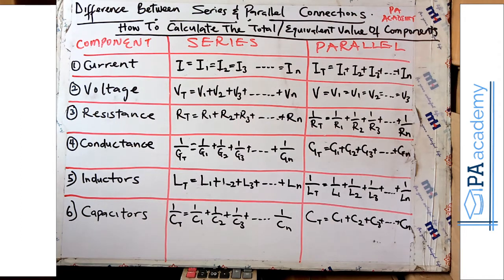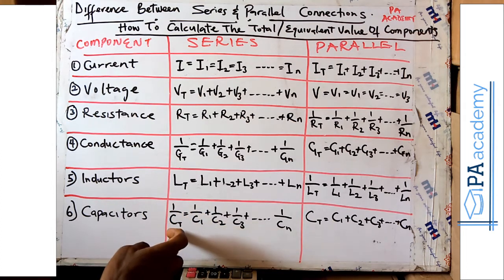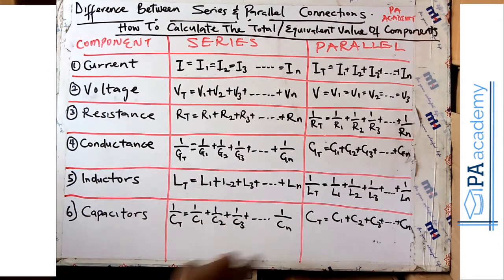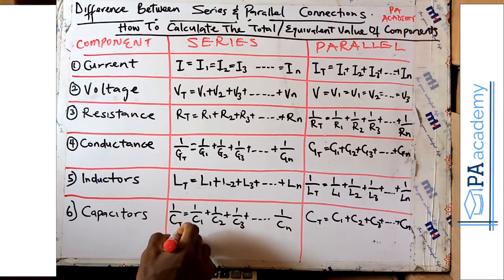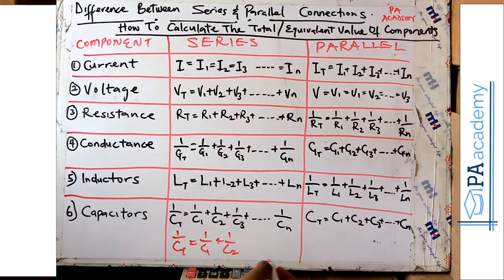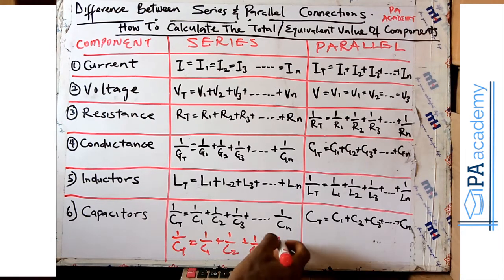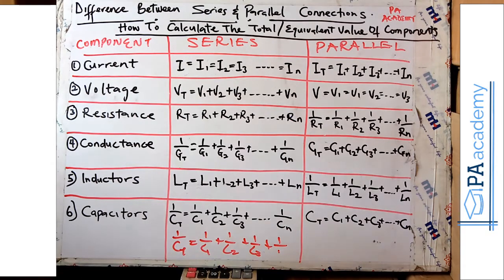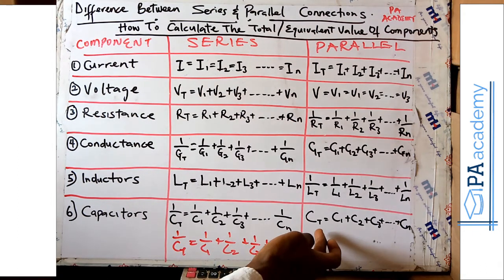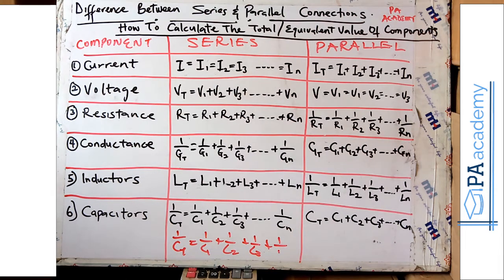For capacitors arranged in series, the formula is 1/Ct = 1/C1 + 1/C2 + 1/C3, depending on how many capacitors you have. For example, with only two capacitors: 1/Ct = 1/C1 + 1/C2. For parallel capacitors, you simply add the individual capacitance values to get the total capacitance in the circuit.